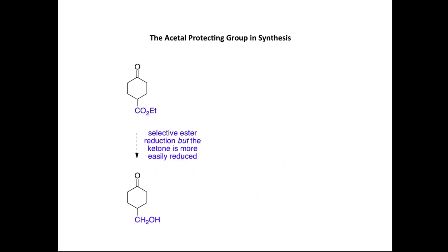Let's now look at an example of the use of an Acetal-protecting group in synthesis. Here is my starting material, which contains both a Ketone and an Ester functional group. What I want to achieve is reduction of the Ester to form a primary alcohol, but I want to retain the Ketone group within the product. The problem is that if I use a reducing agent such as lithium-aluminium hydride, the first thing that will happen is reduction of the Ketone, as this is the most reactive carbonyl.